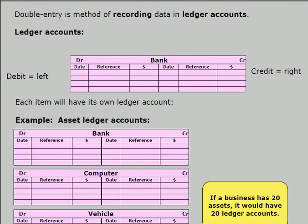Double entry is a method of recording data into ledger accounts. Ledger accounts are accounting records. We use what's called T-type ledger accounts because they look like large T's. These large T ledger accounts have a left hand side which we call the debit side, and a right hand side which we call the credit side. So in the context of double entry accounting, the word debit simply means on the left hand side, and the word credit simply means on the right hand side.